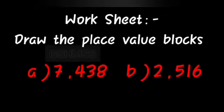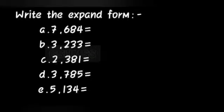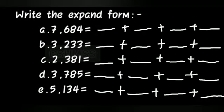Here I have given the worksheet for you: draw the place value blocks of the given number. First one is seven thousand four hundred and thirty-eight, second one is two thousand five hundred and sixteen. Do the following homework in your rough note.